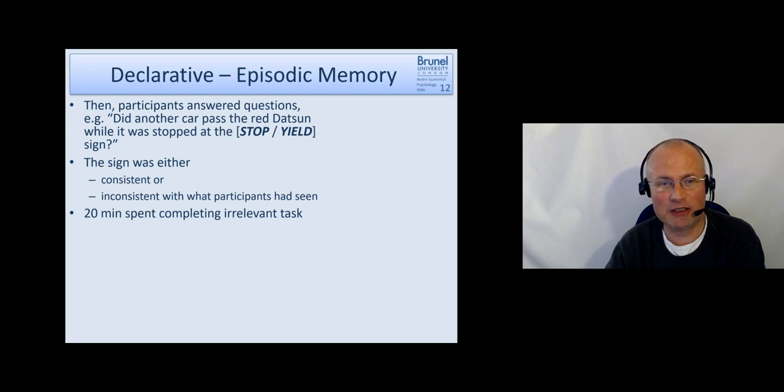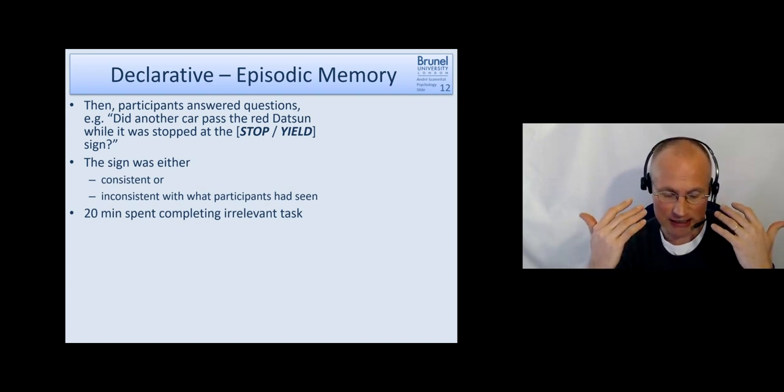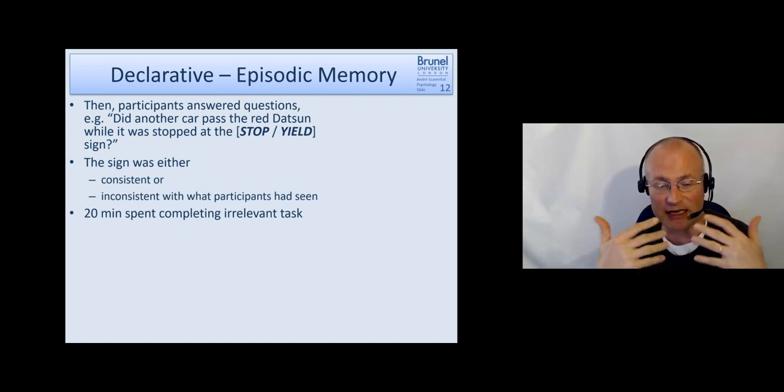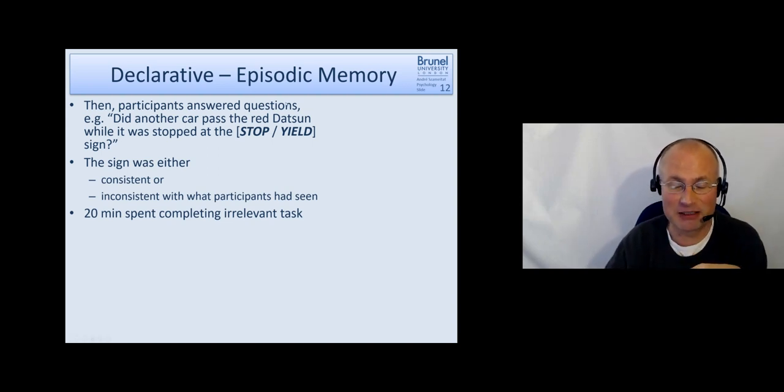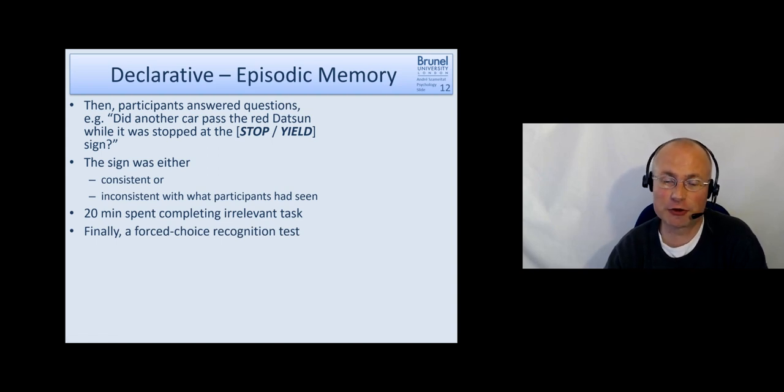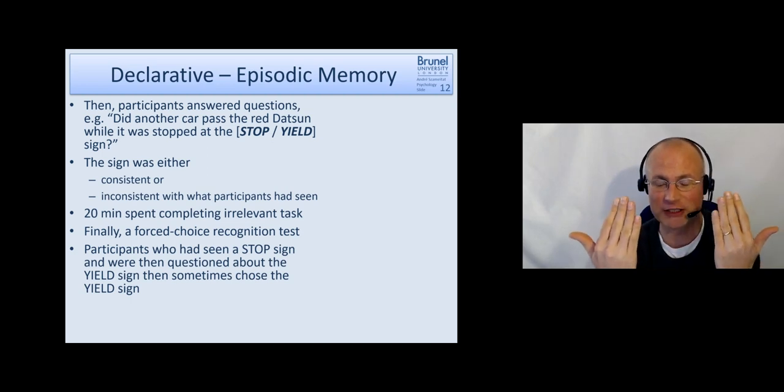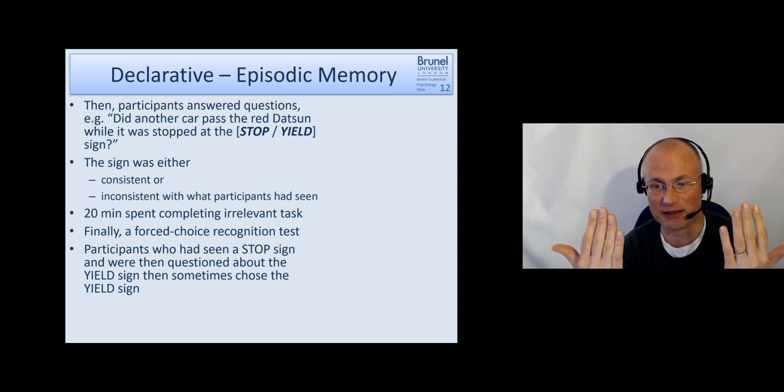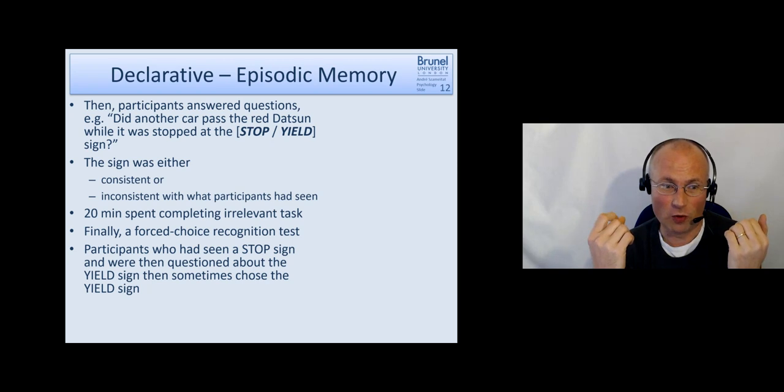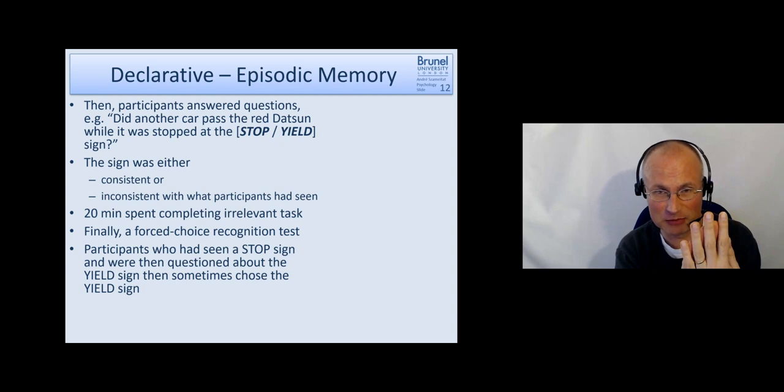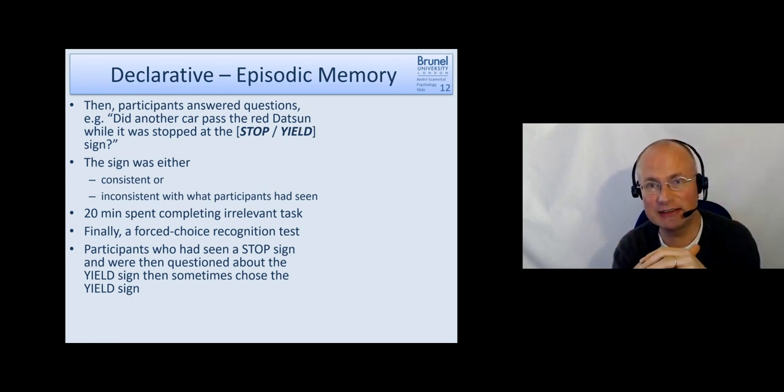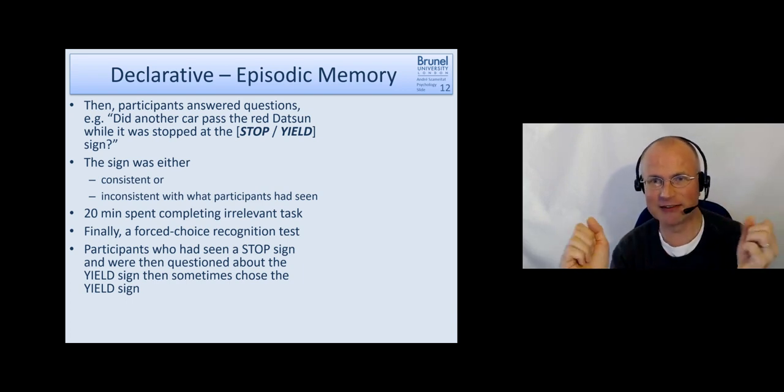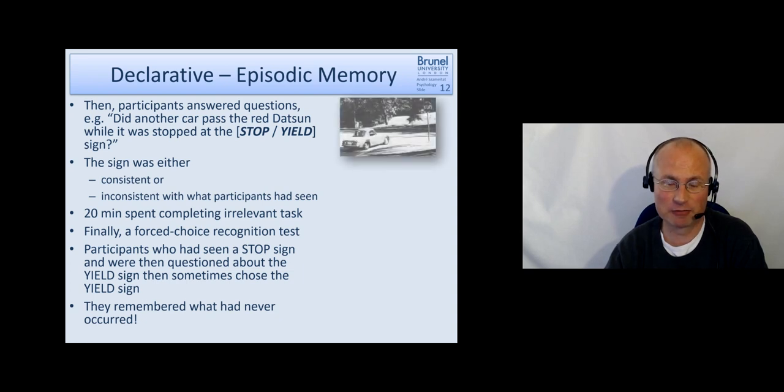Then participants spent 20 minutes on a completely irrelevant task to get a certain time distance in there and to make sure that this information really is out of short-term memory. If this had an impact, it must have come from long-term memory. In the end they did a forced choice recognition test where they showed the two pictures we have just seen—one with a stop sign and one with a yield sign—and they said 'what have you seen before?' Now what happens is if people have seen the stop sign but you asked them in this question and included 'yield,' then some of those participants actually chose the picture with the yield sign and the other way around. This is not a tremendously massive effect, but they remembered something which had never occurred.